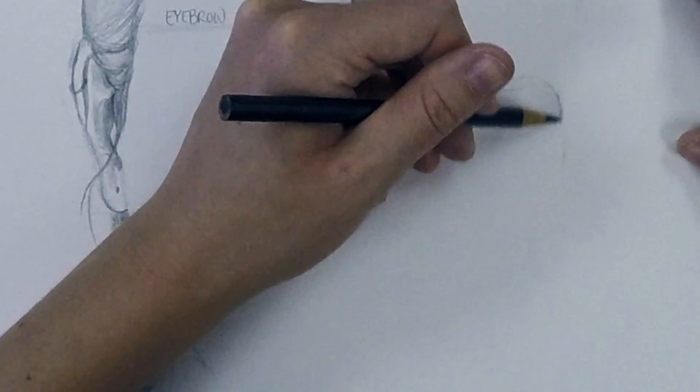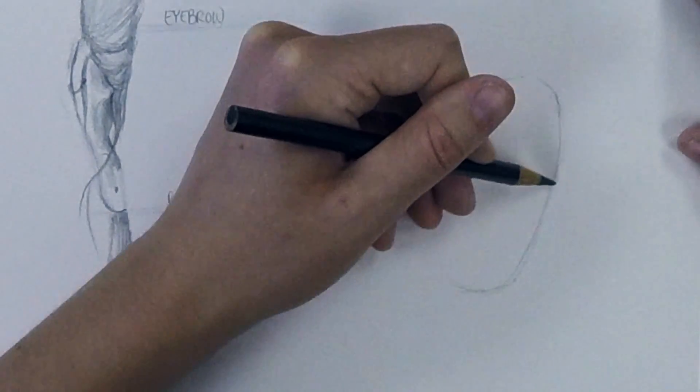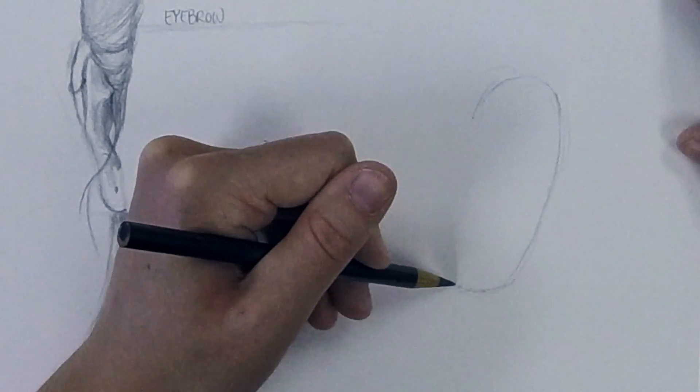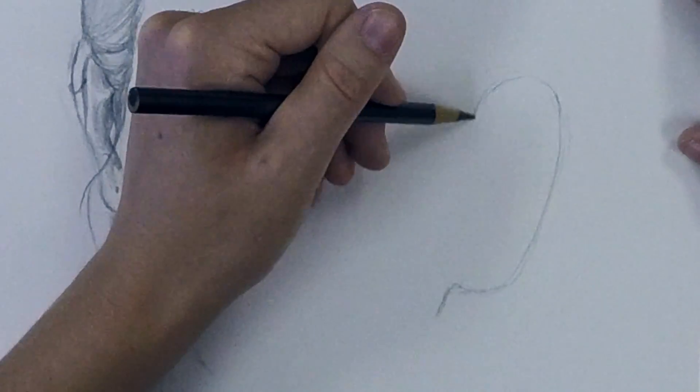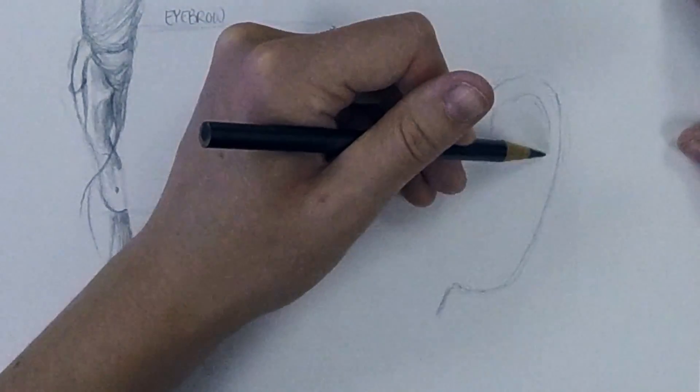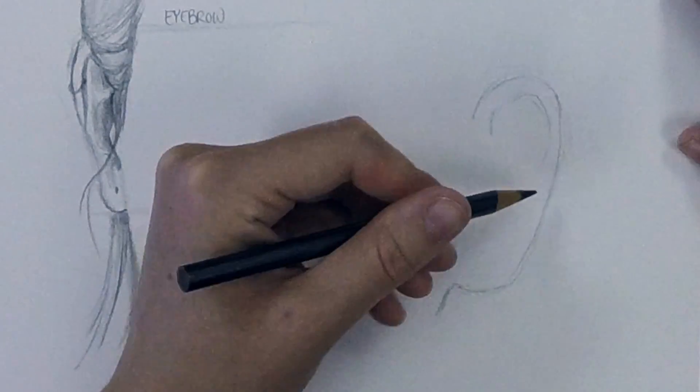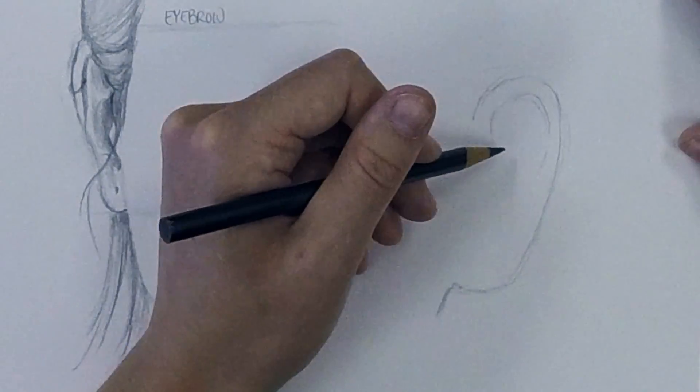If we were to look at the ear from the side, we would start again with a bigger C shape. Depending on your ear lobes, you might have connected lobes or free-hanging lobes, and that would be where your jawline is. We have that loop of cartilage up at the top.